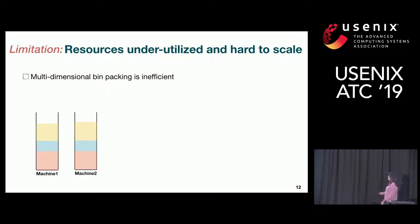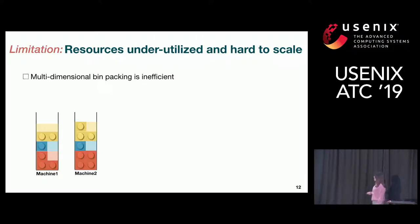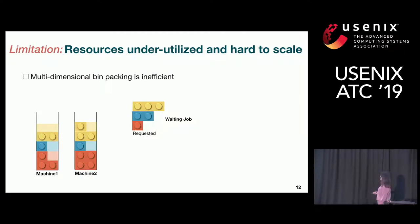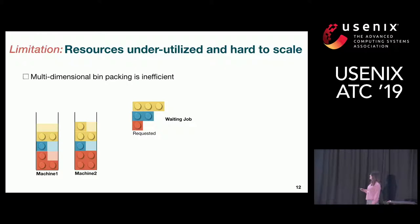Let's look at a very simple example. Say we have two machines — this is the occupied resource on machine one and machine two. We have this waiting job which needs three yellow, two red, two blue, and one red. Together, machine one and machine two have enough resources, but because this job has to run on a single machine, we cannot run this job.